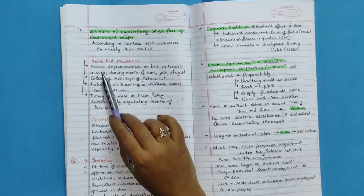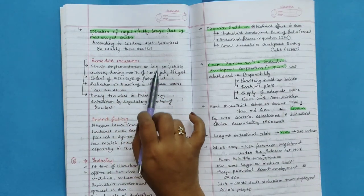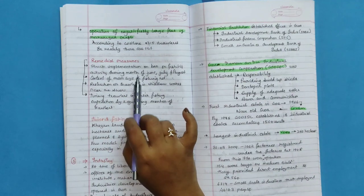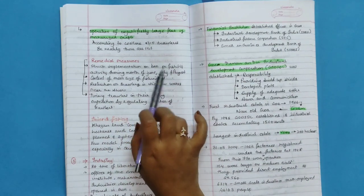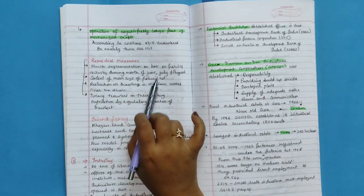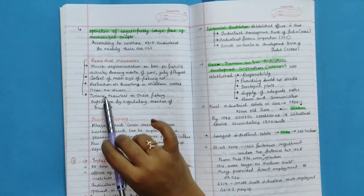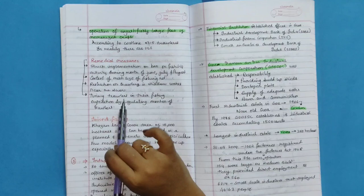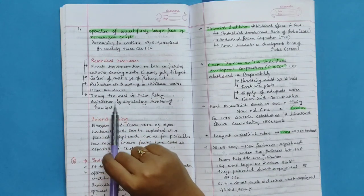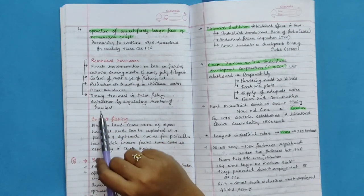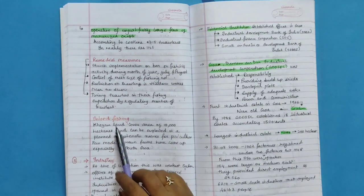Remedial measures: Strict implementation on ban on fishing activity during month of June, July, and August. Control of mesh size of fishing net. Restriction on trawling in shallow waters near the shore. Timing trawlers in their fishing expeditions by regulating number of trawlers.